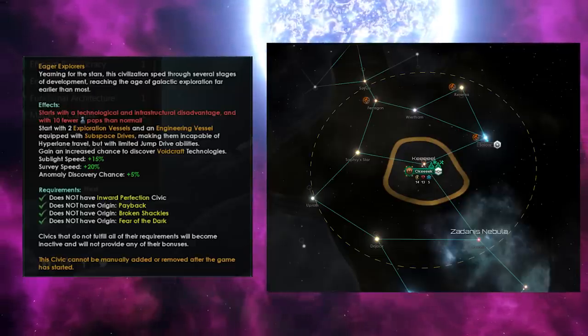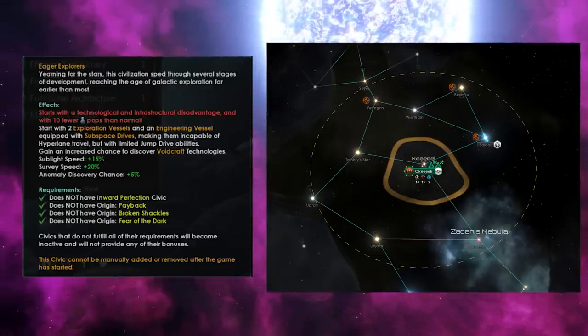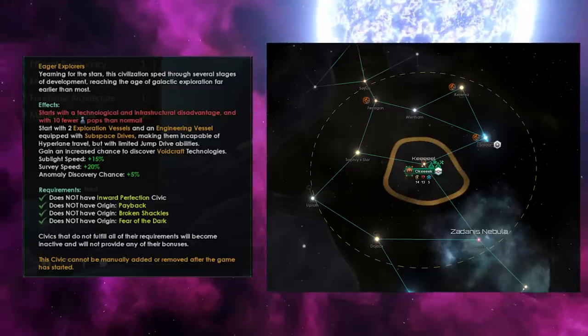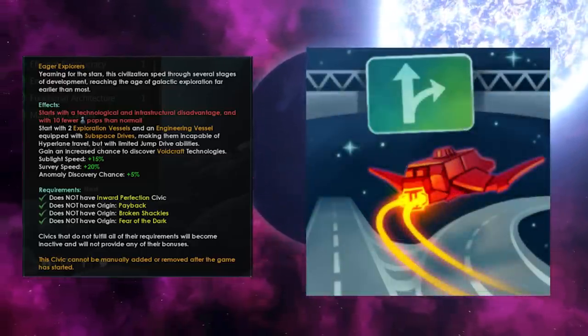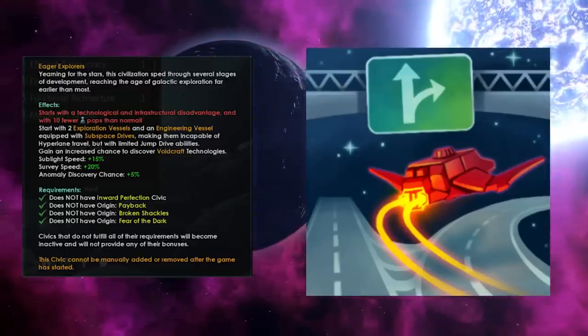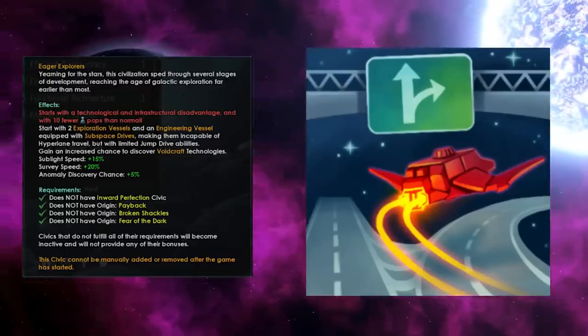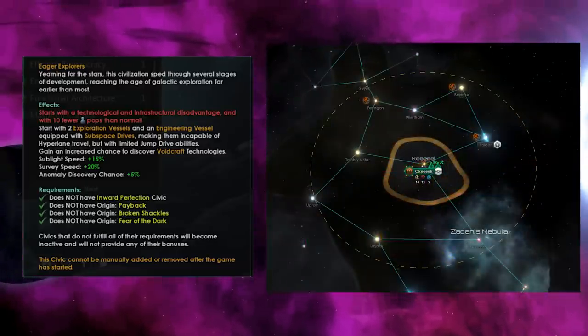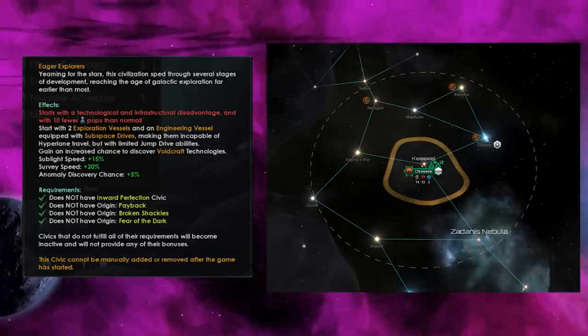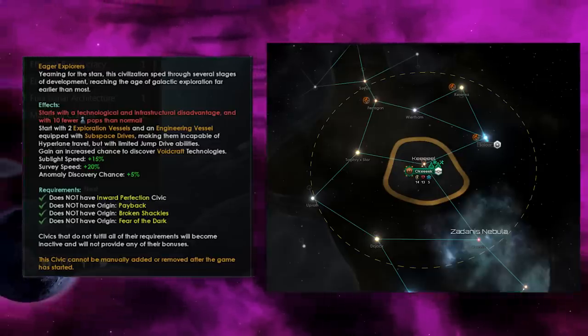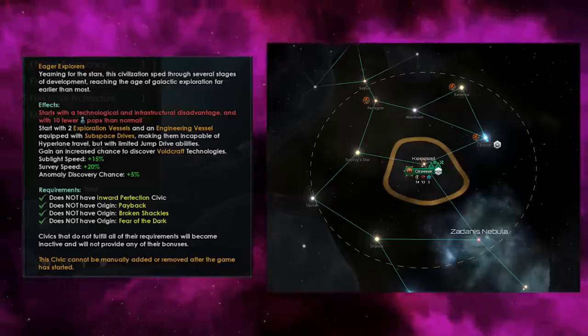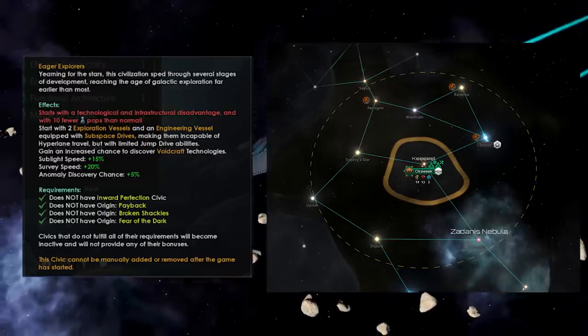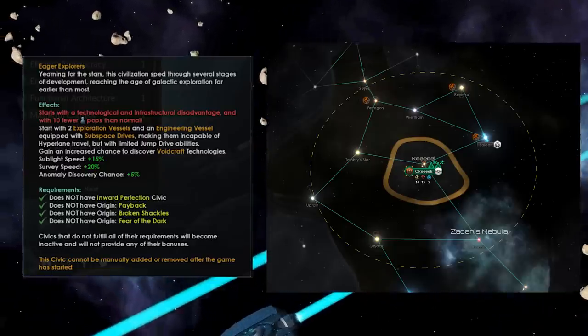If you decide not to research the hyperlane technology and colonize 10 worlds while using this new tech, you will get the Road Not Taken achievement because you're doing something completely different and using a different type of technology than everybody else. Words cannot describe how hyped I am for this. Having only one type of technology that's completely different from everybody else's is really, really cool.